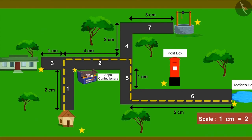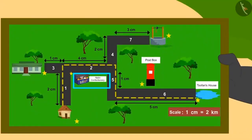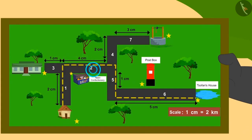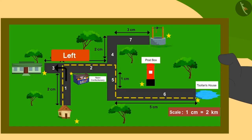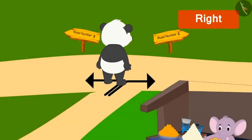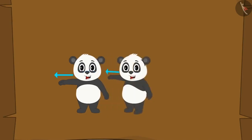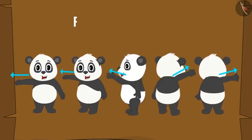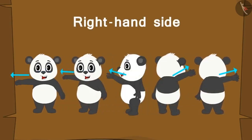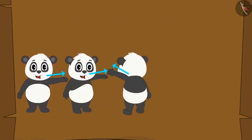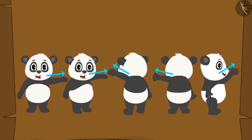Golu was to go right on road number 2 from Appu's confectionery, but he took a left turn from Appu's shop, which was road number 3. The direction that comes to your right hand side is called right hand side, and the direction that comes towards your left hand, we call it left hand side.